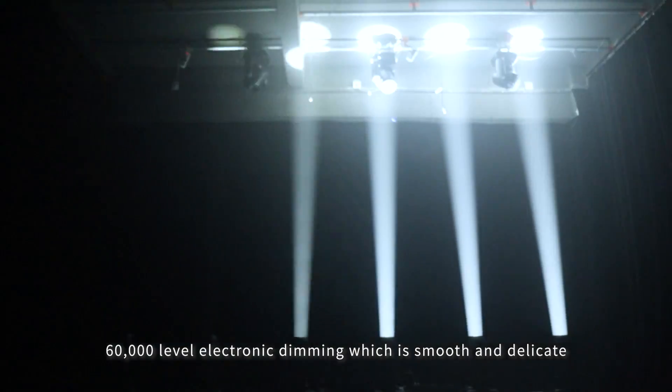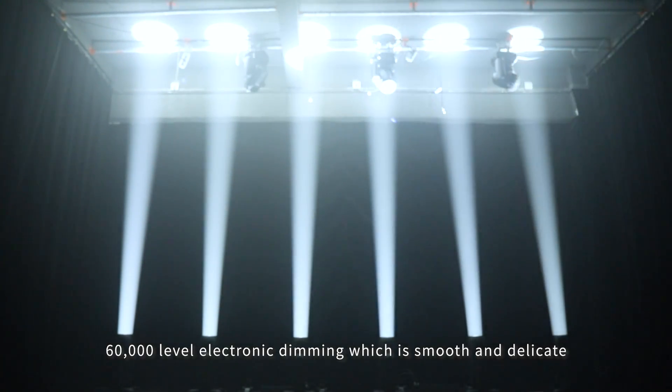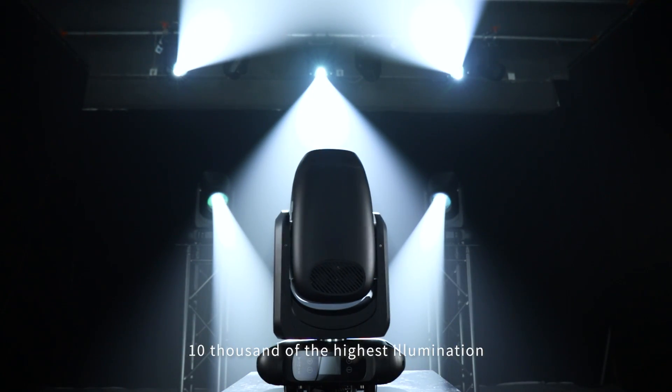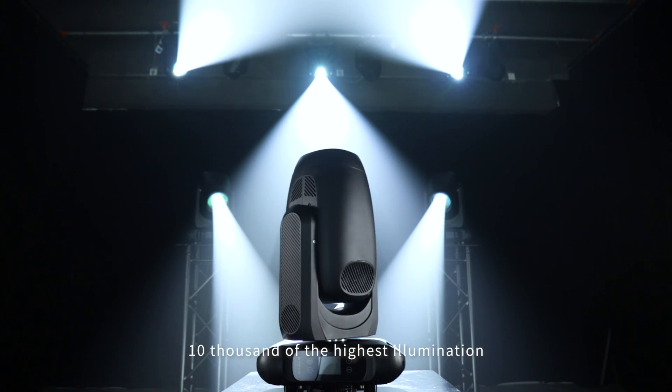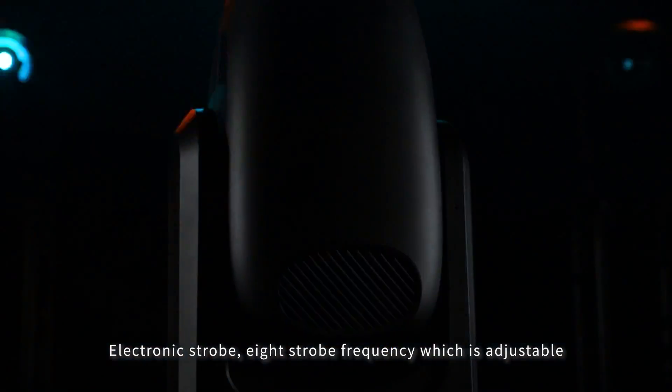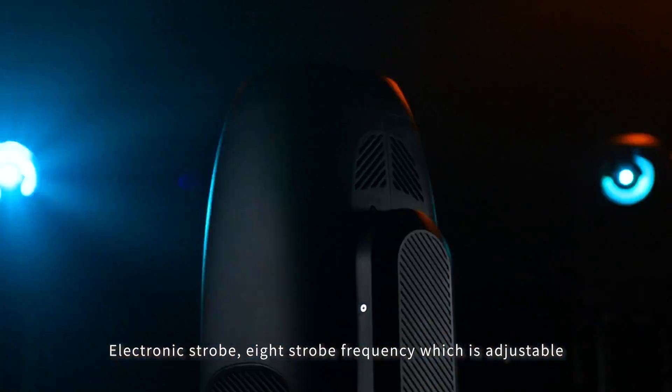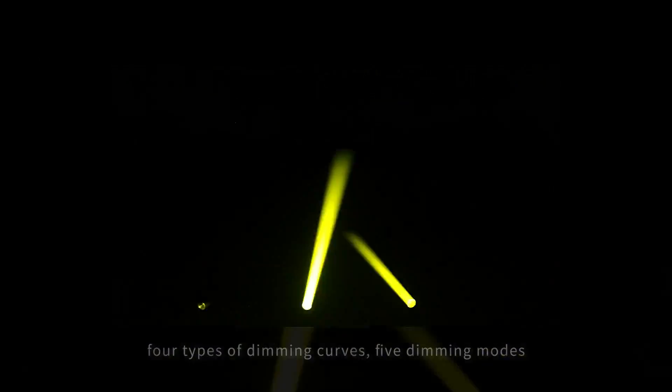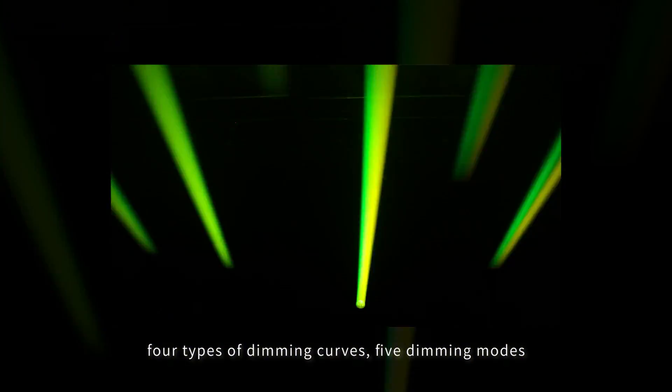Theater-level dimming technology features 60,000-level electronic dimming which is smooth and delicate. The lowest illumination level is less than 1/10,000 of the highest. It includes electronic strobe with 8 adjustable strobe frequencies, 4 types of dimming curves, and 5 dimming modes.